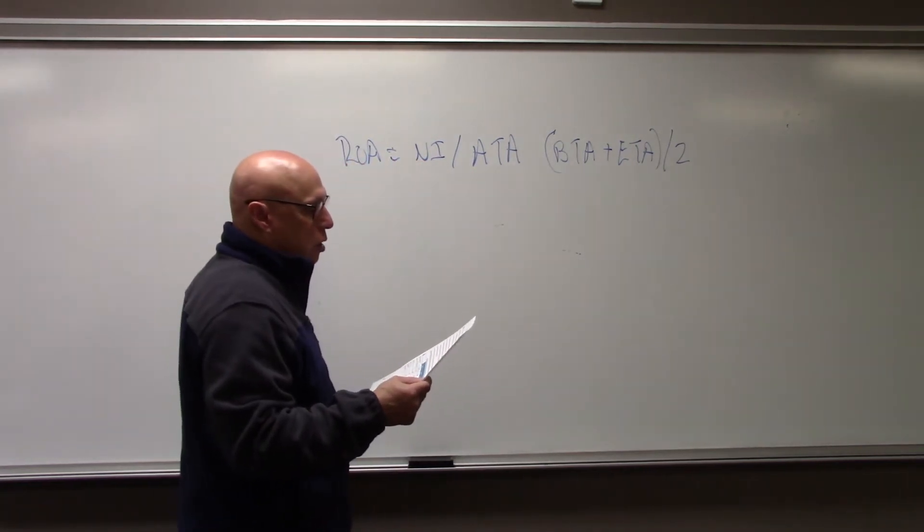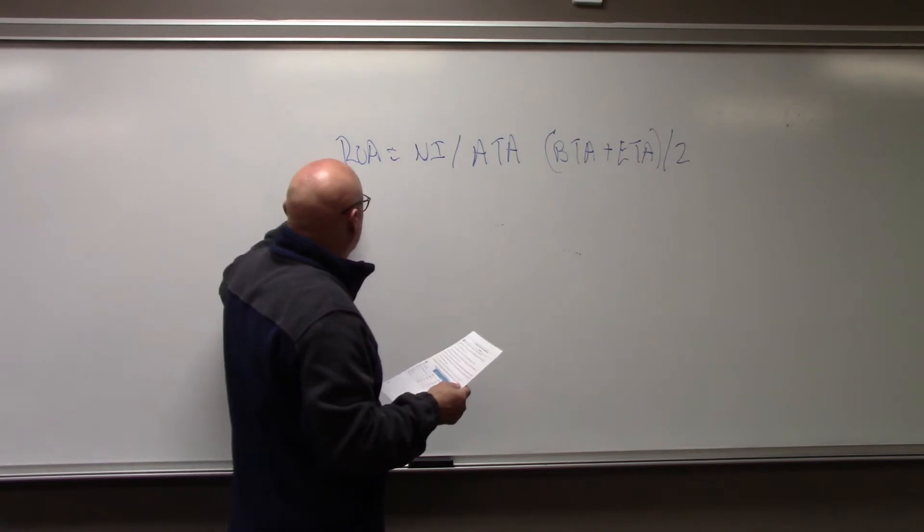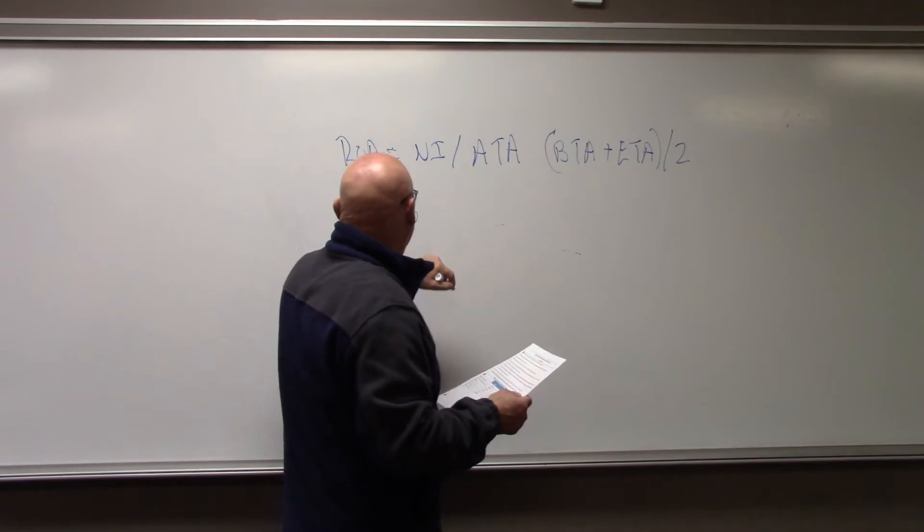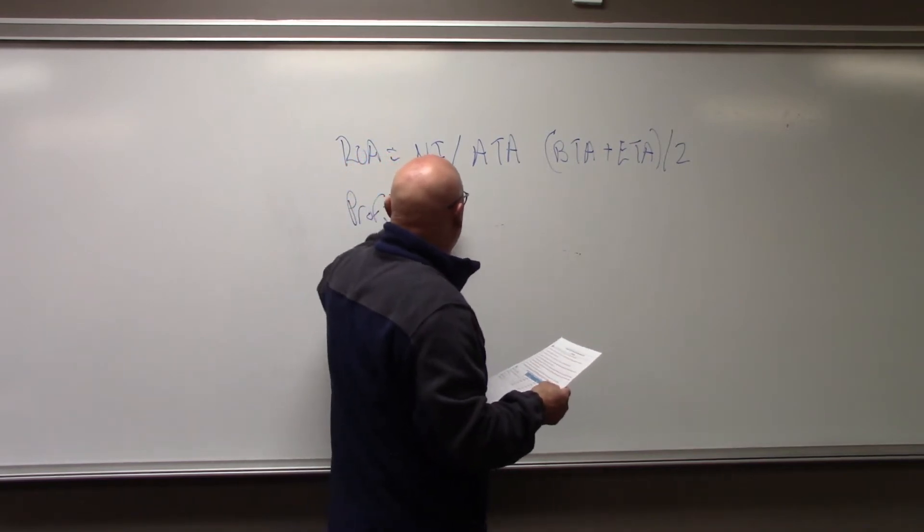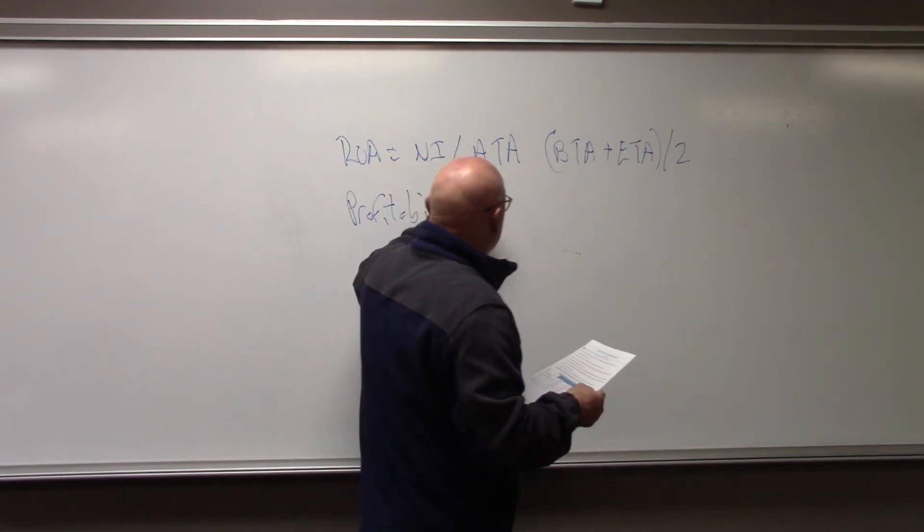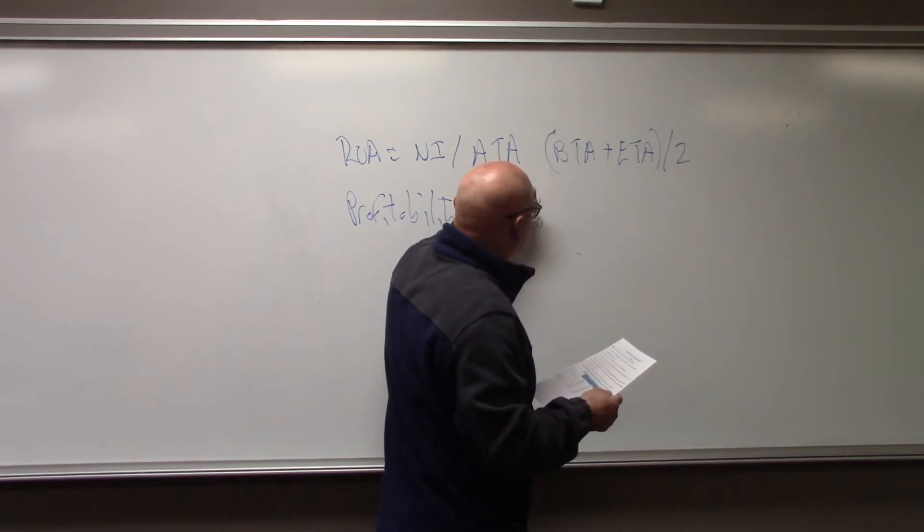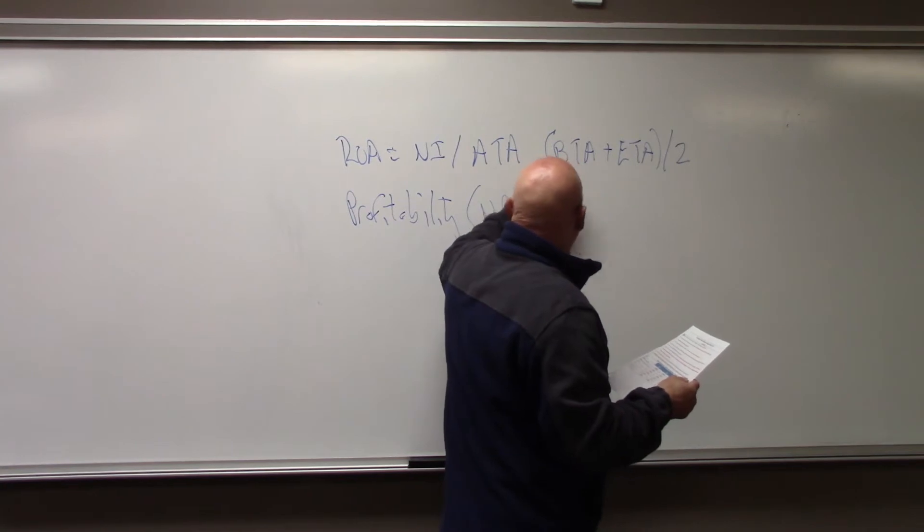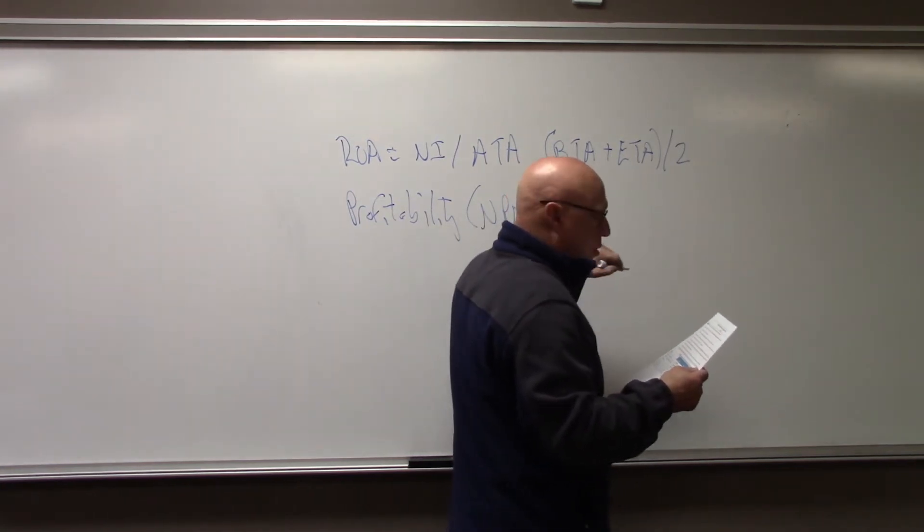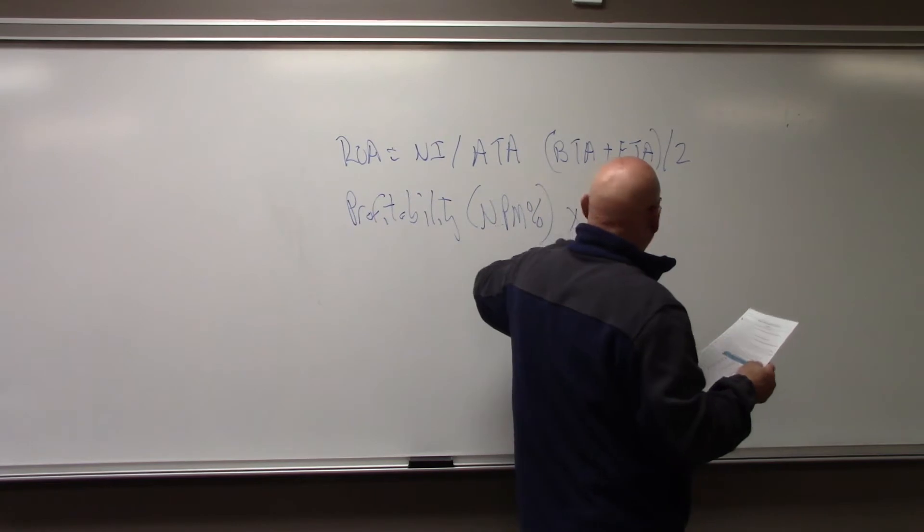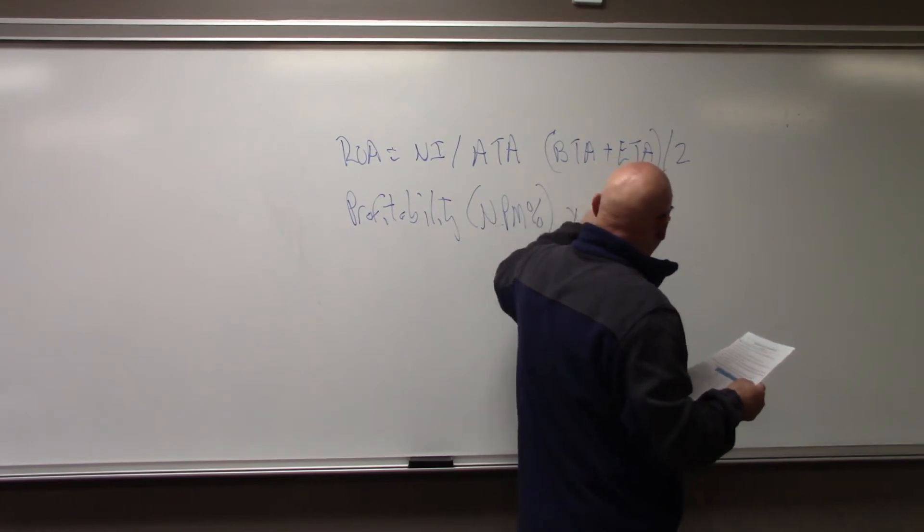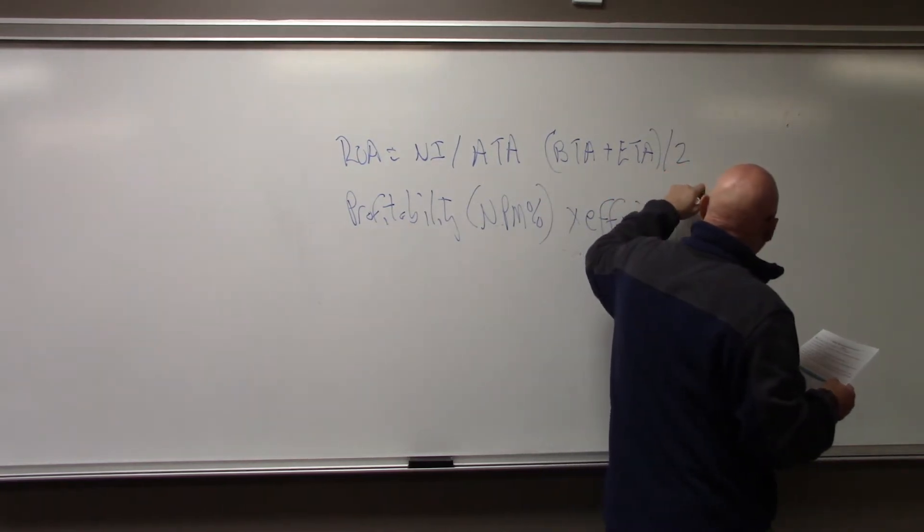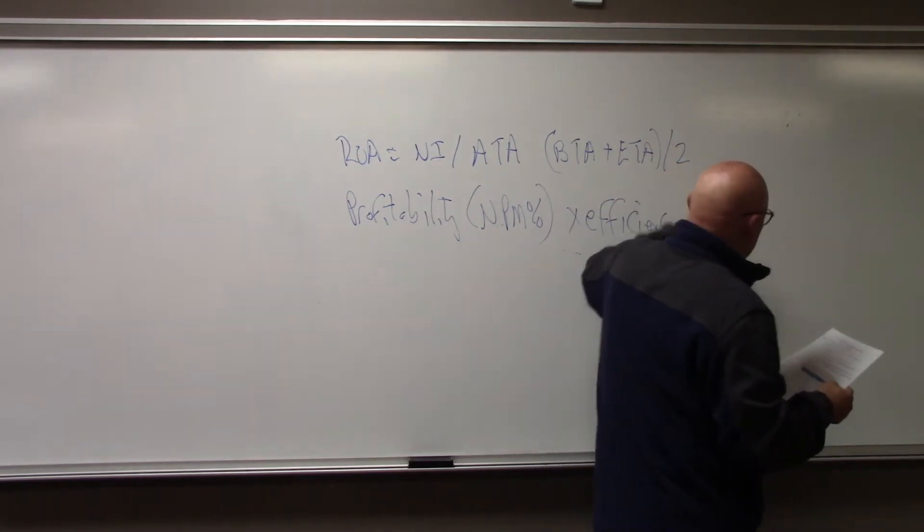What are the two components of return on assets? Profitability, which is the net profit margin percentage, which we just calculated in homework five. And efficiency, which is the total asset turnover ratio.